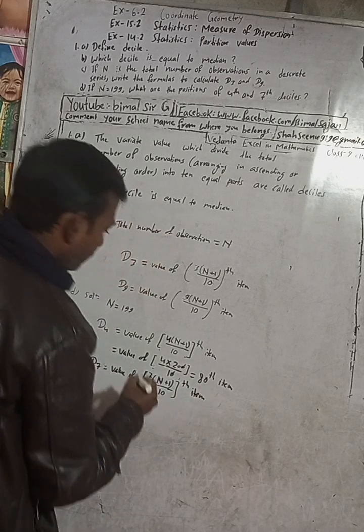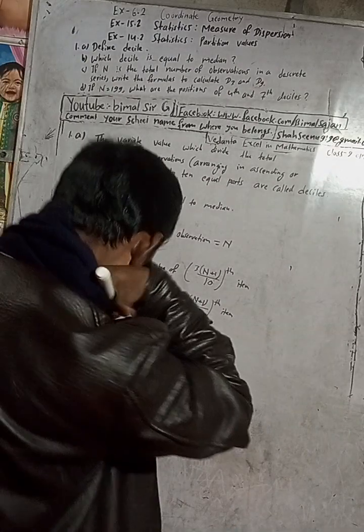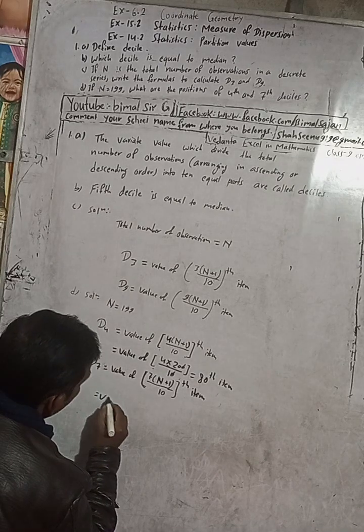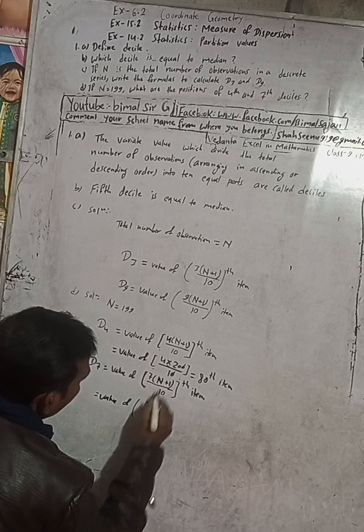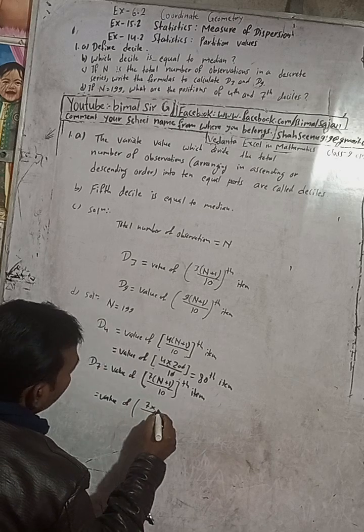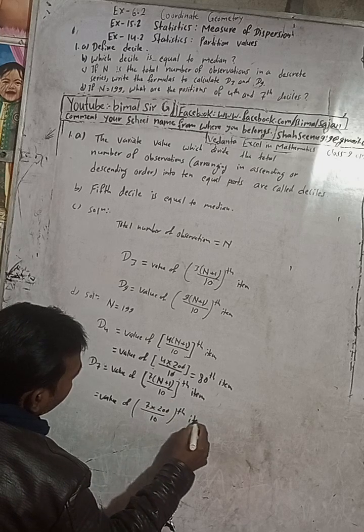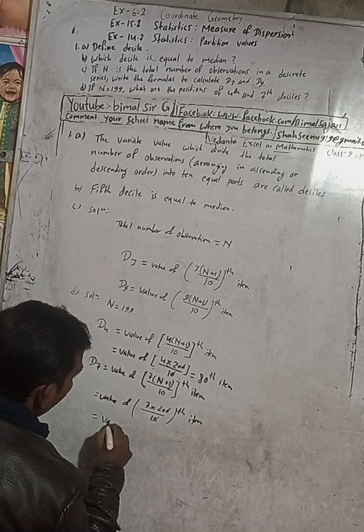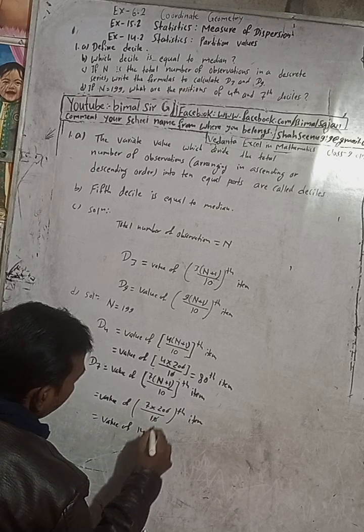So this is 7 times N plus 1 means 200 by 10. TH item. Now here is value of 7 times N plus 1, N plus 1 means here is 199 and 1, so 199 is 200, and this is 10, TH item. Now this is 0 cancelled, so 7 times 20, so this is equal to answer for value of 7 to the 140th item.